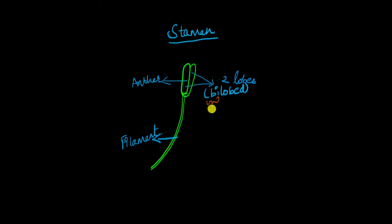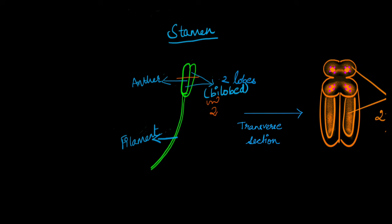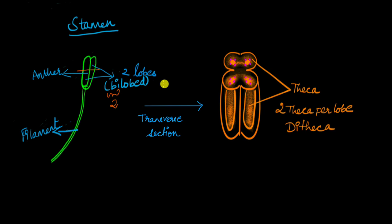If we make a horizontal cut through the middle of the anther, we get the transverse section. Looking at this transverse section, we can see the two lobes of the bilobed anther. Inside these lobes are tubular structures called theca, and inside the theca are pollen sacs within which the pollen grains are produced.